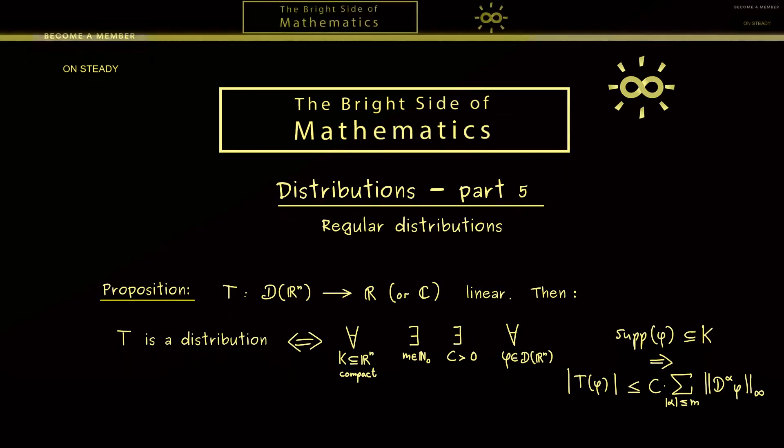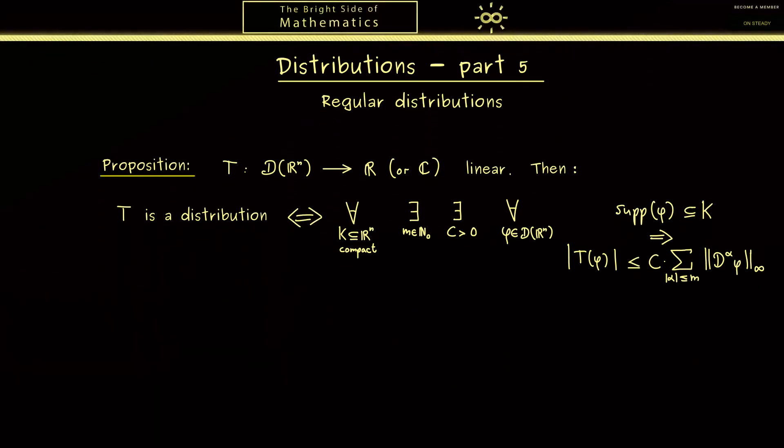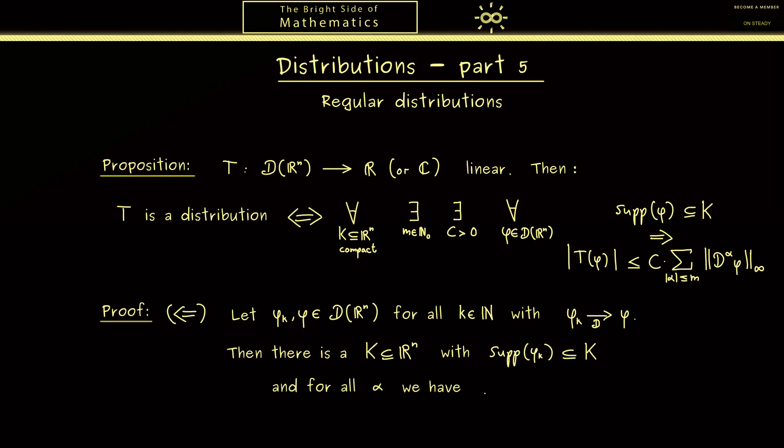Since at first it looks complicated, we really should write down a proof for it. So let's start with this direction: when we have the estimate, what can we say about continuity? In order to show this, let's choose test functions phi_k and phi such that we have our d-convergence for the sequence phi_k to phi. Then we know by definition there is a compact or bounded set K in R^n such that the support of all phi_k's lies in this compact set K. And we also know that for all multi-indices alpha, the derivatives D^alpha phi_k converge in the supremum norm. Please keep in mind this was just the explanation of what the d-convergence here means.